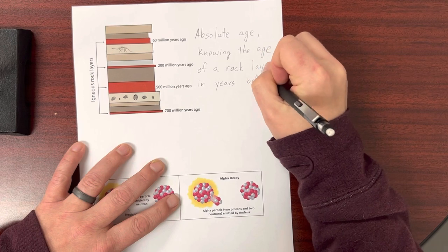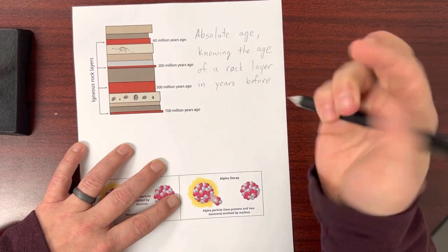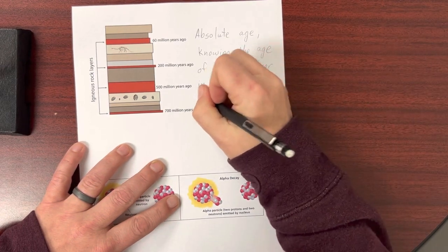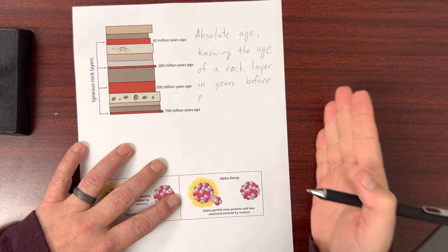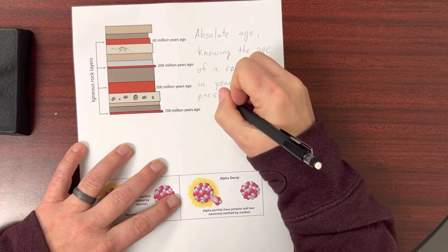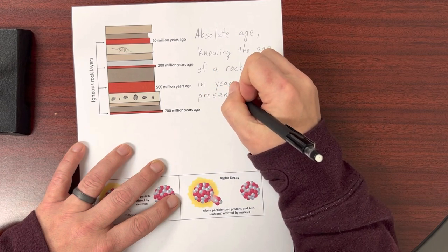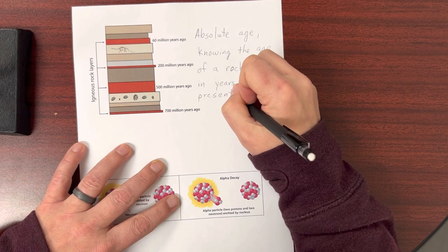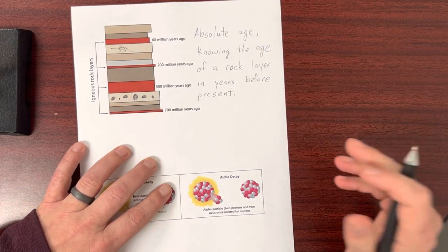And usually the ages, the absolute age of a rock layer, is given relative to years before the present time. So 50 million years ago, 1 million years ago, 50,000 years ago.